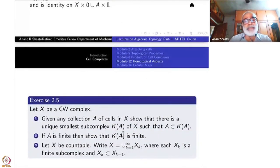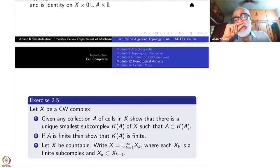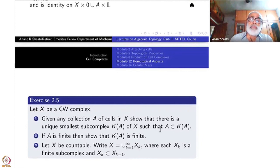Here is an exercise I've already used, but now I'd like you to write down the details. Take any collection A of cells in X and show that there is a unique smallest subcomplex K(A) of X such that A is contained inside K(A). If A is finite, then K(A) is finite. This is important because when you take any collection of sets, you have to show that the subcomplex is finite.